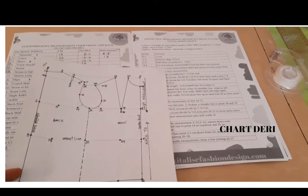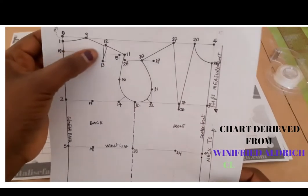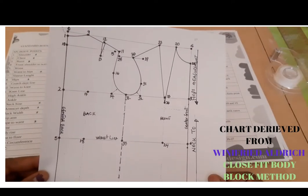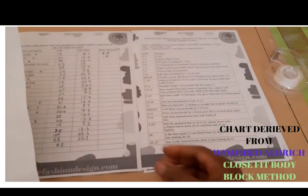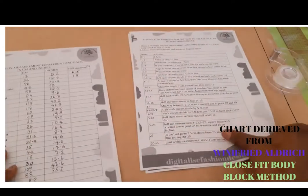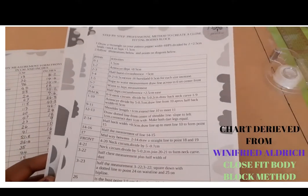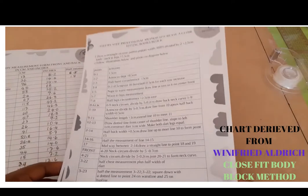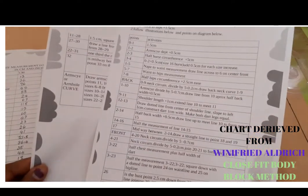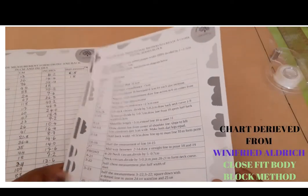These are the three things we are going to be using: this chart showing the numbering points for our professional basic bodice block, your measurements that you've already written, and these instructions on how to do it. You can follow me on the video, but it is good to have the booklet because it is very self-explanatory and helps you understand it faster.